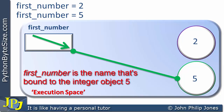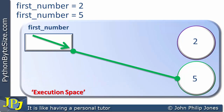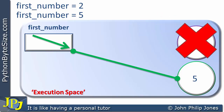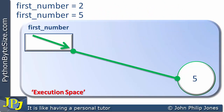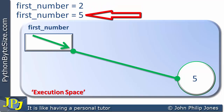The binding between first_number and the 2 is now removed. We now have first_number being bound to the object that contains 5. Another way of saying this is that first_number is the name bound to the integer object 5. Now the old object containing 2 has nothing pointing to it, so it will be garbage collected and removed from memory. In summary: the first line created an integer object with value 2 and bound first_number to it; the second line bound the same name to a different integer object containing 5.